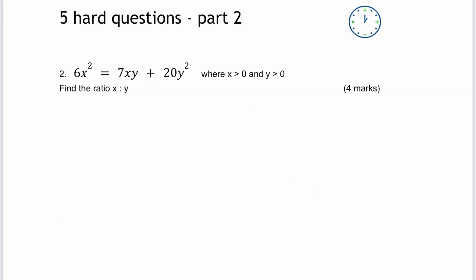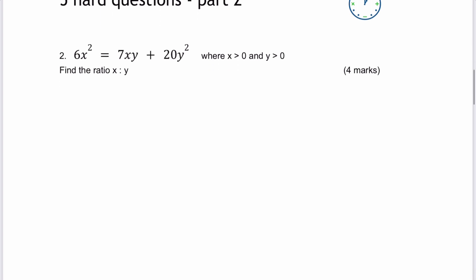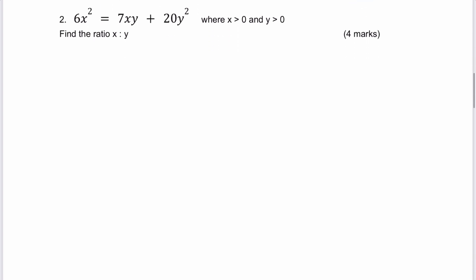So this is question two and we've got 6x squared equals 7xy plus 20y squared. What it tells us is the values of x and y are greater than zero, and we need to find the ratio.